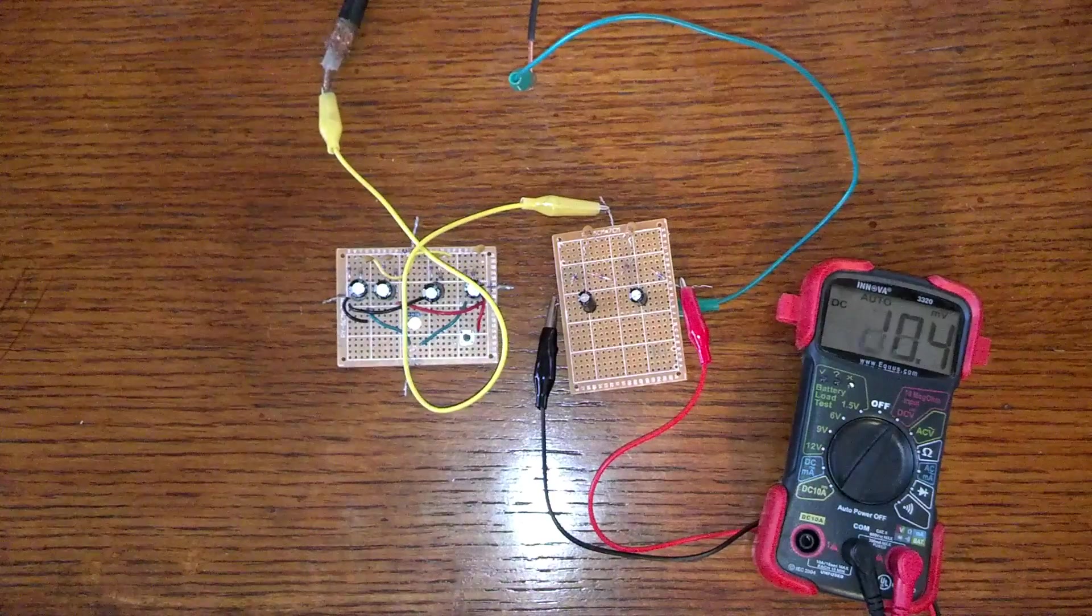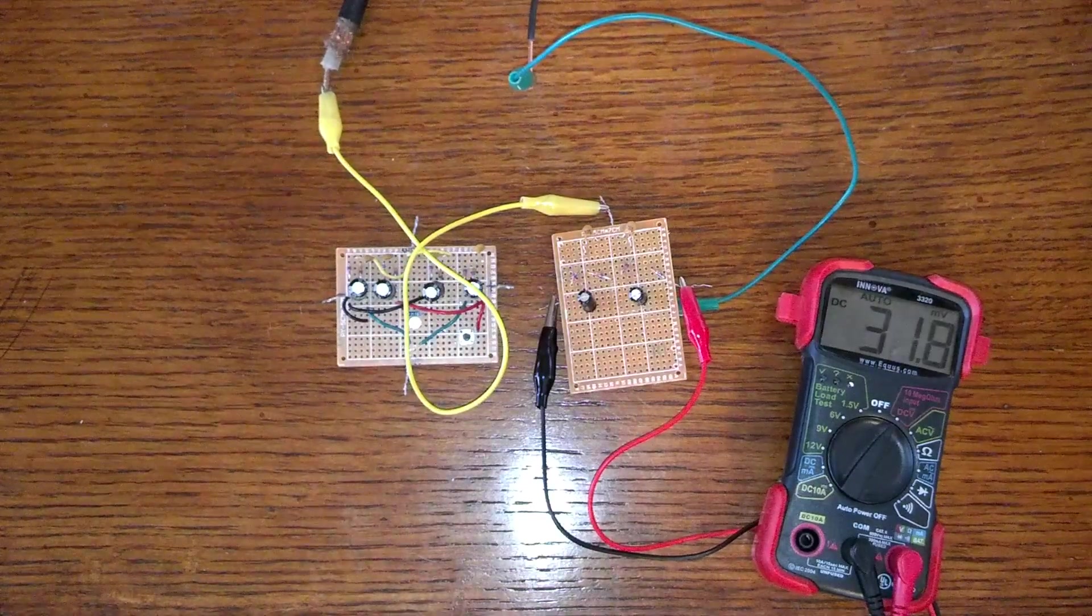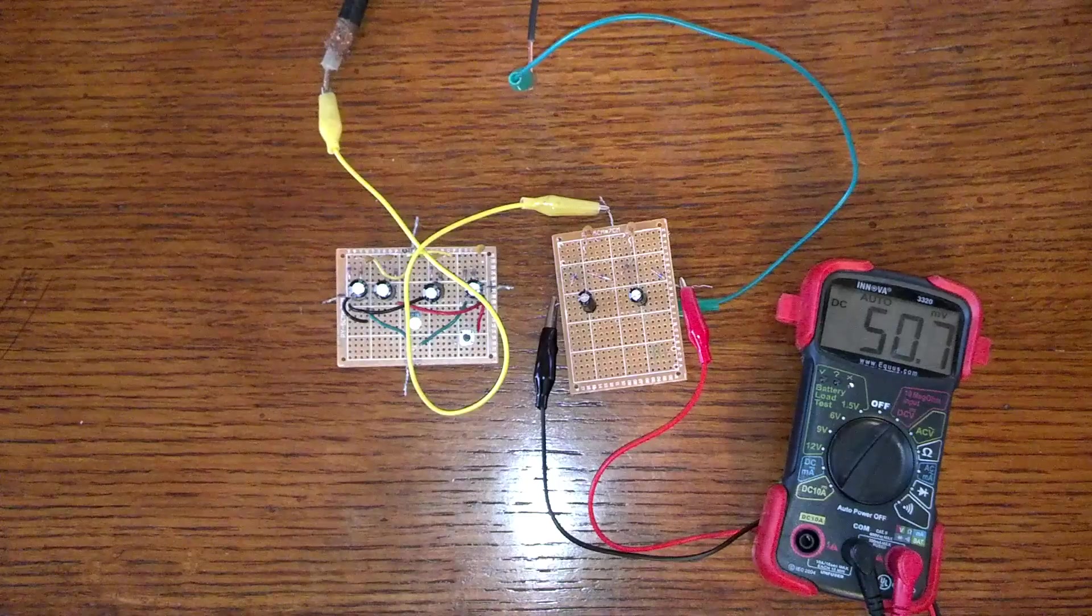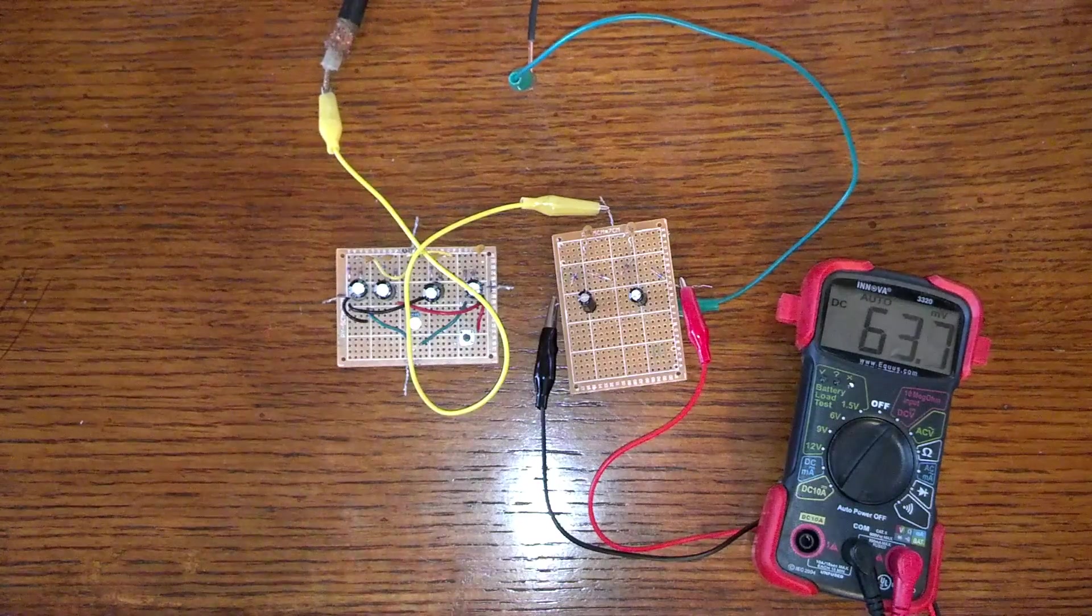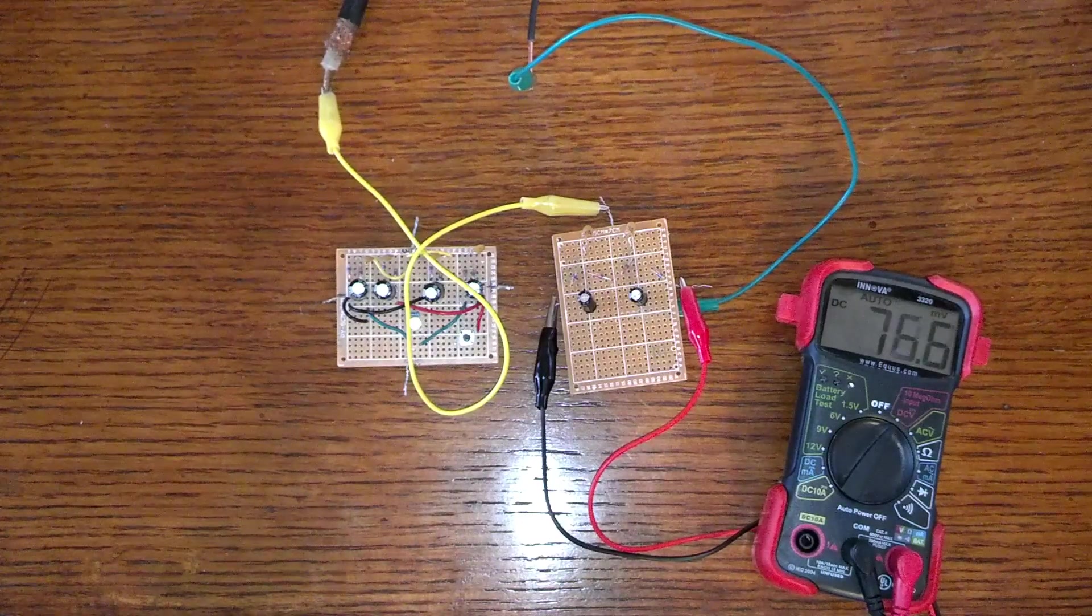And I'm going to connect my antenna right here. And see what happens. Look at that. We're already getting an increase in DC voltage. 45 millivolts and going up.